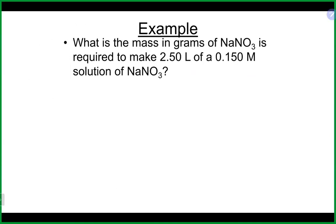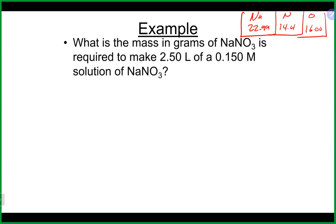Let's look at an example: What is the mass in grams of sodium nitrate required to make a 2.5-liter solution that is 0.15 molar? Sodium is 22.99, nitrogen is 14.01, and oxygen is 16. We're looking for how many grams of sodium nitrate we would need.